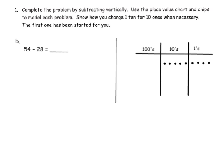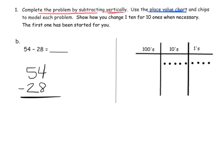In this one, it says complete the problem by subtracting vertically — that's the standard algorithm. However, we are going to use the place value chart as a scaffold to make sure we're doing it correctly. So the first thing we're going to do is record 54 minus 28. When we model 54, here are five dots in the 10s column, and four dots in the 1s column.